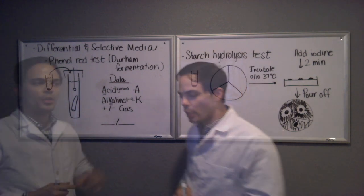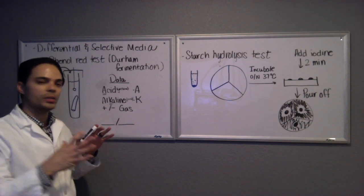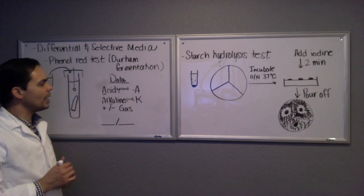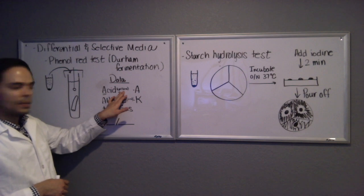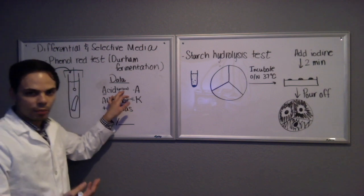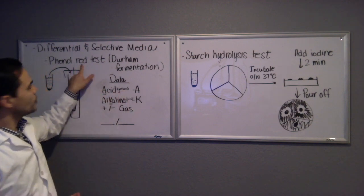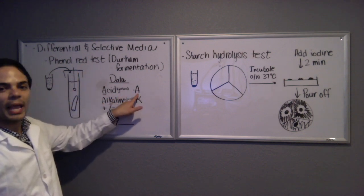The next day when you return, compare the color of the un-inoculated tube to the colors of the ones that you did inoculate. If it turns yellow, that means that the bacteria ate the lactose, fermented it, produced acidic byproducts, and that will turn the phenol red indicator in this test a yellow color. So we would log A for acid.